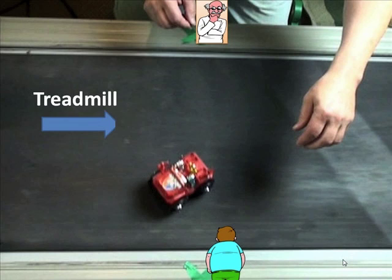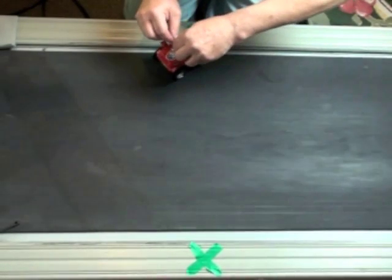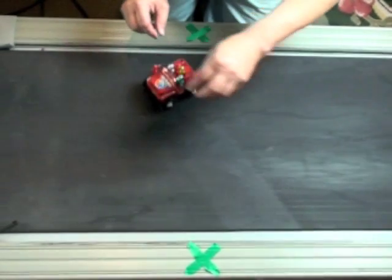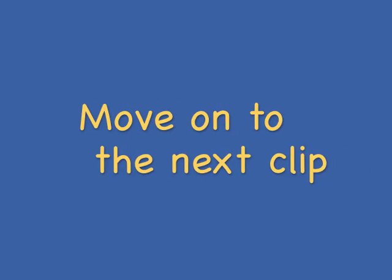Now here's my little car on the treadmill. And I want it to head directly across. So the treadmill moves to the right. The car moves into the treadmill at an angle. When I add those two vectors up head to tail, I see that I get a sum that goes directly across the treadmill. So here it is. And here it is in slow motion. Thank you.